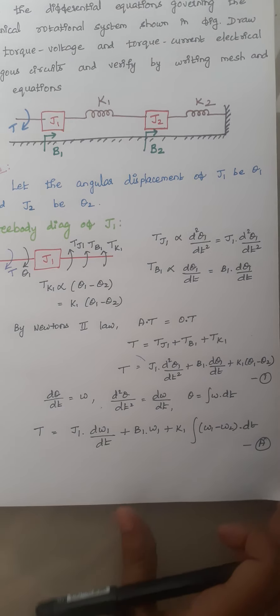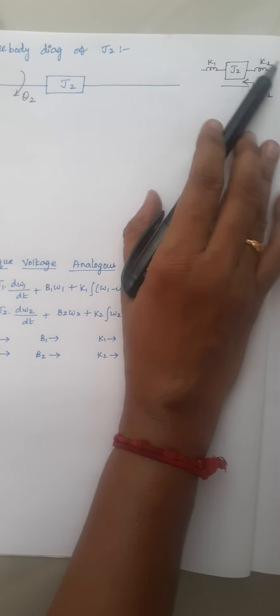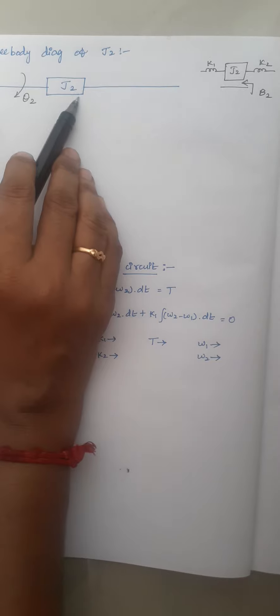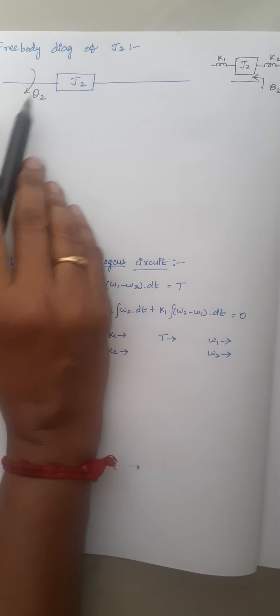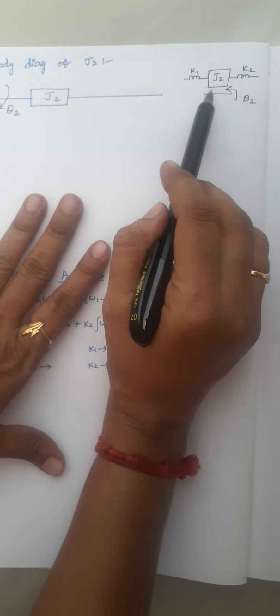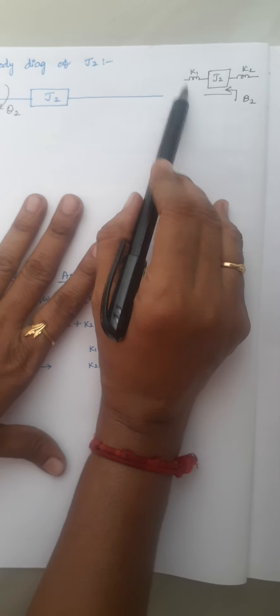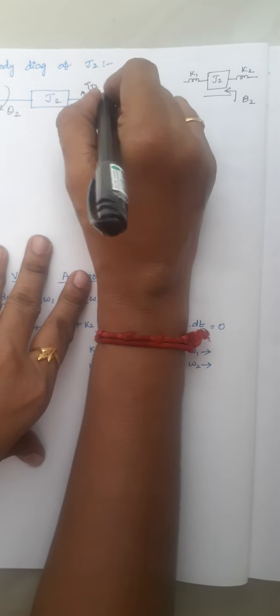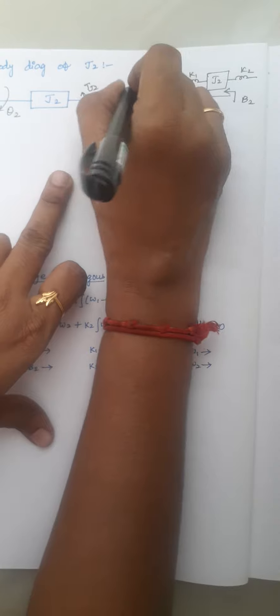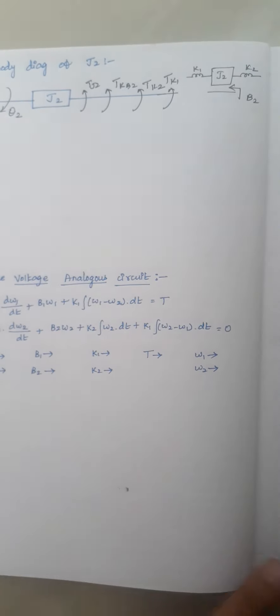The next step is to draw the free body diagram of mass J2. There is no direct torque applied on J2, and the displacement of J2 is theta 2. The opposing torques are produced by three elements connected with J2: K1, K2, and B2. Apart from these, an opposing torque is also produced by J2 itself — giving T_J2, T_B2, T_K2, and T_K1.